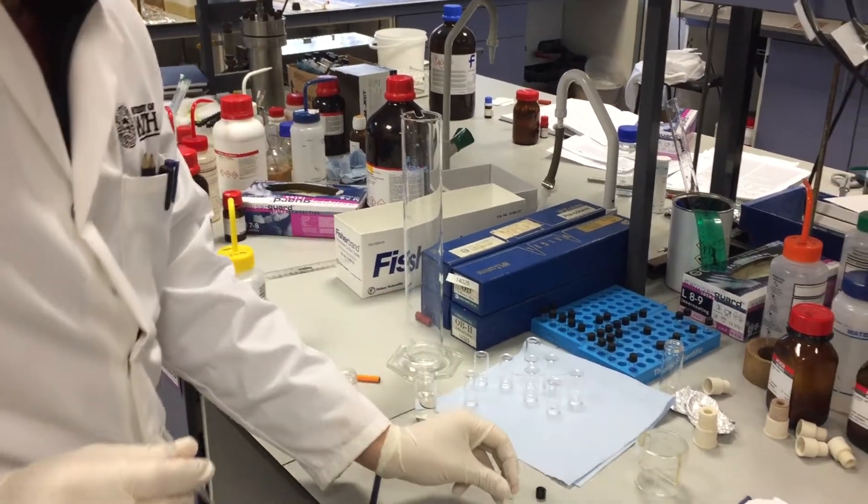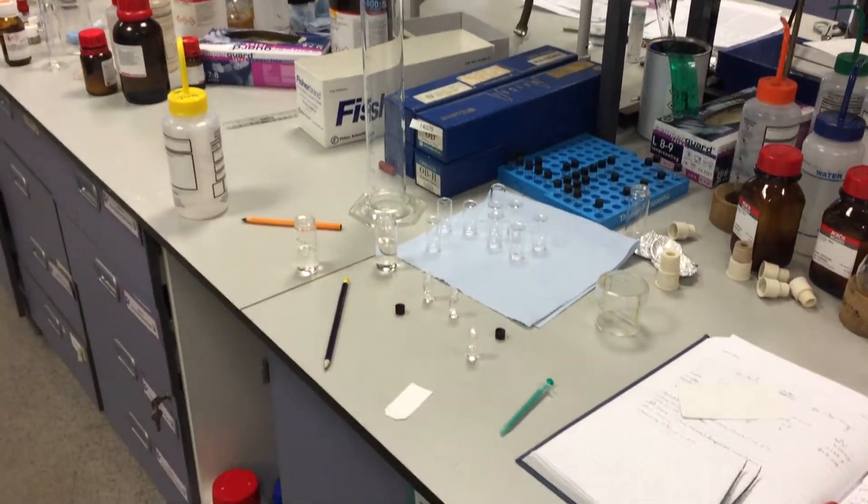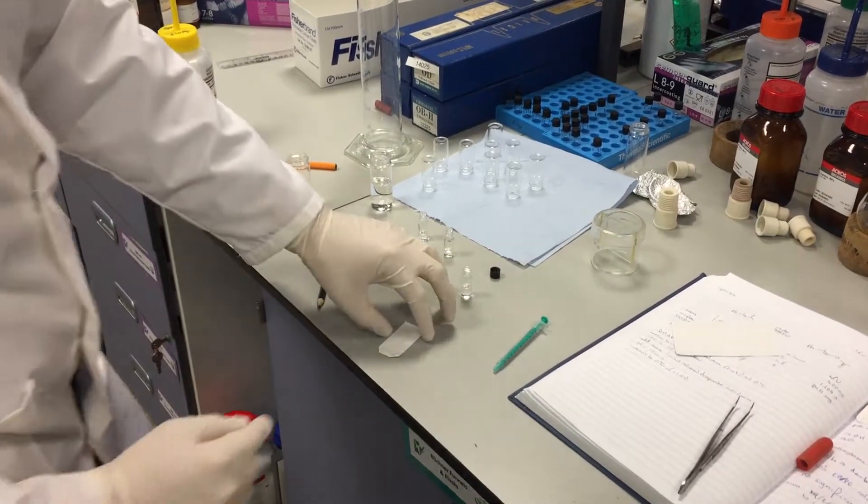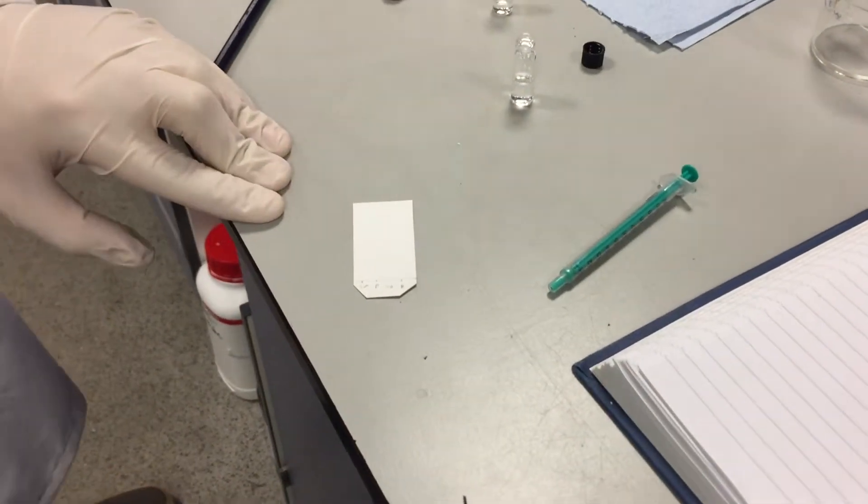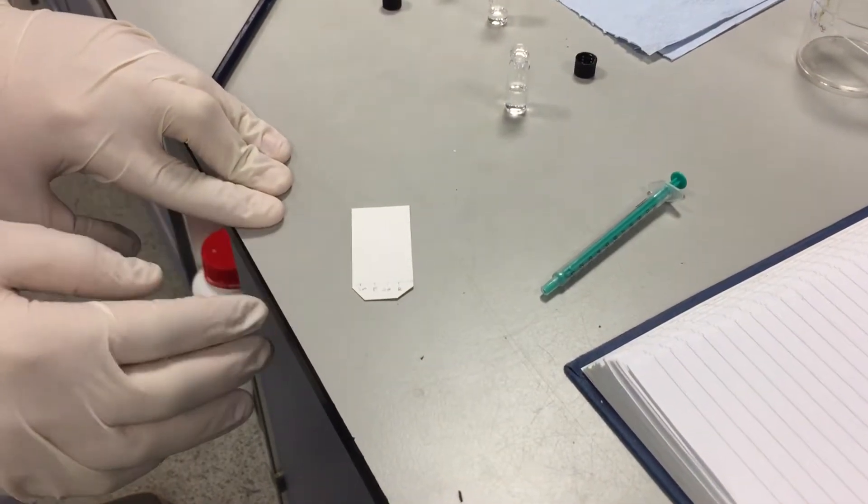We're then going to spot this onto our TLC. So here I have a prepared TLC plate in which I've drawn a baseline and I've put spots for starting material,